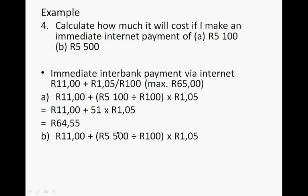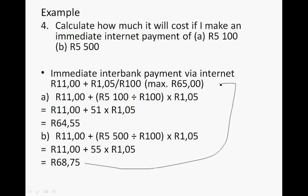But if I make a payment of R5,500, it's 55 times R1.05 = R57.75, plus R11.00 = R68.75. However, the maximum fee is R65.00, so you will only pay R65.00. Therefore, as soon as you make interbank internet payments of around R5,400 or more, you will only ever pay R65.00.